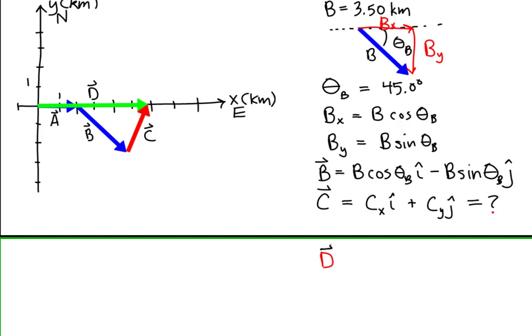Vector d is where we end up on our journey, the sum of vectors a, b, and c. Vector d is equal to d i-hat. The magnitude of vector d is 5.8 kilometers.